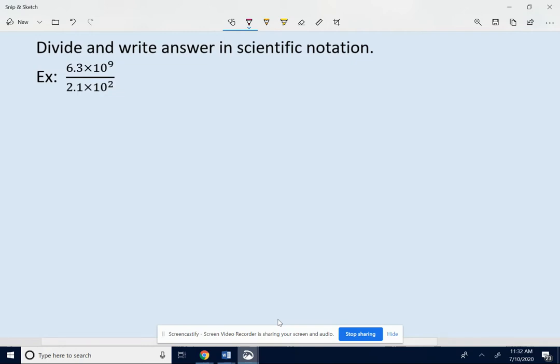The shortcut for dividing numbers in scientific notation. Let's take this example: 6.3 times 10 to the 9th divided by 2.1 times 10 to the 2nd. The shortcut is to just know that you could break this apart into 6.3 divided by 2.1 times 10 to the 9th divided by 10 to the 2nd.